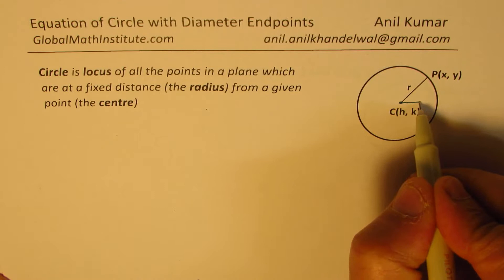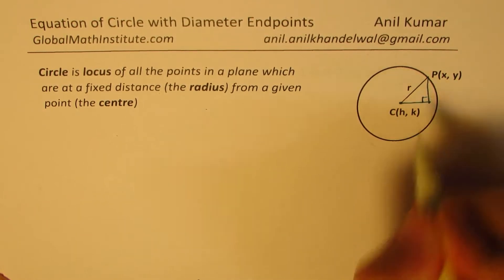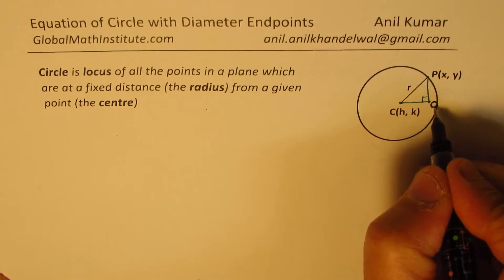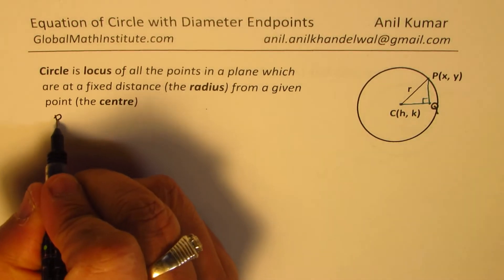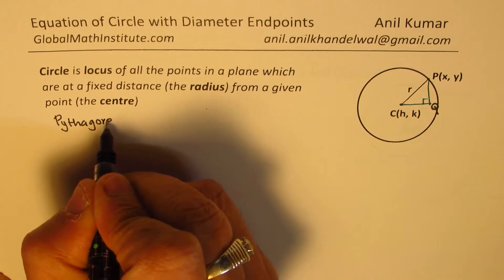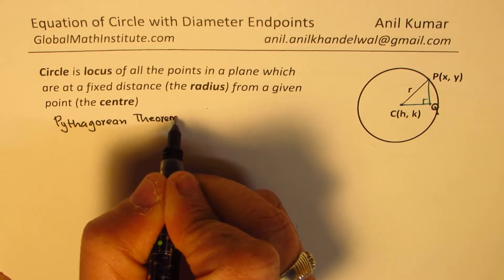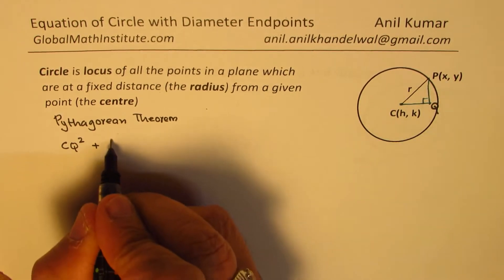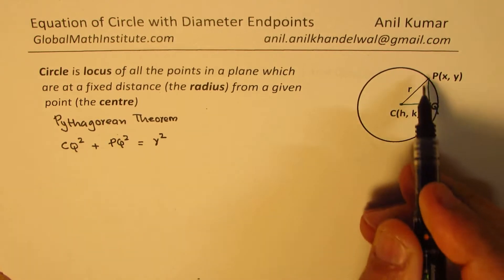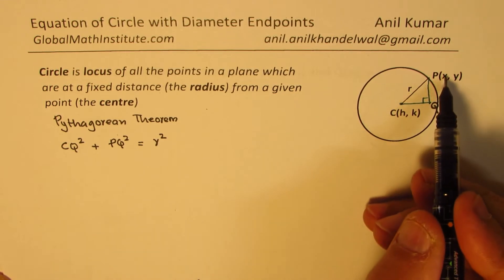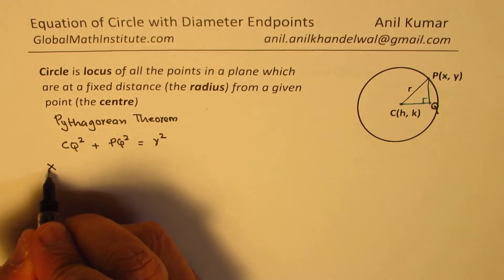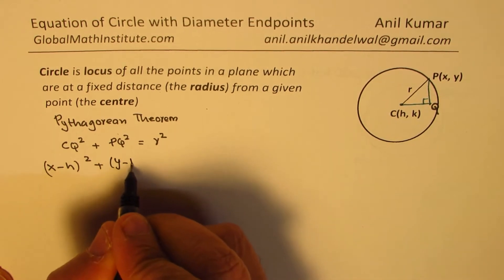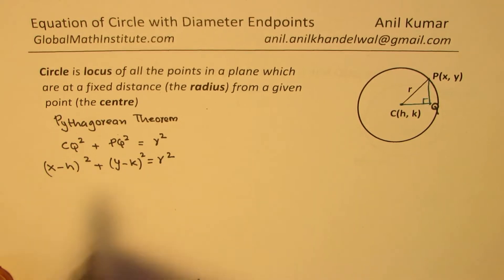We'll derive the equation of a circle from this concept. If I make a right triangle, let's call this point Q. Using the Pythagorean theorem, the distance C to Q squared plus P to Q squared equals R squared. We can write this as (x - h)² + (y - k)² = r². That becomes your general equation.